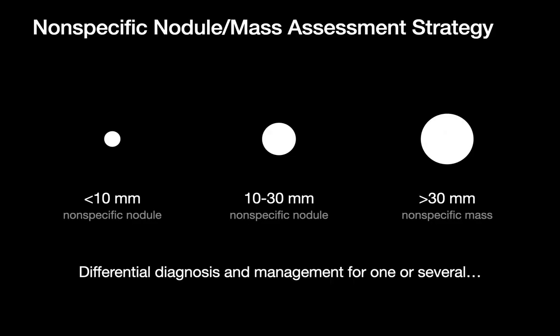Our strategy for assessing and managing nonspecific nodules and masses is divided into three buckets: how to handle sub-centimeter nodules and masses, how to handle nodules in the one to three centimeter category, and how to handle masses over three centimeters. Masses are probably the easiest to discuss first, so that's where we'll start.